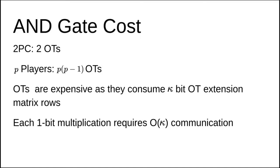Now, OTs are expensive since they are public key primitives. In order to reduce the costs, GMW implementations use the Efficient OT Extension Protocol by Ishai, Kilian, Nisim and Petrank from Crypto 2003. The idea of OT Extension is that a small number of base OTs, along with much cheaper symmetric key operations, can generate a large number of OTs. Furthermore, these OTs can be pre-computed by a trick introduced by Beaver in Crypto 1995. Despite these improvements, OTs consume OT Extension Matrix rows of size kappa, which is the computational security parameter and is often set to 128. Thus, computing a one-bit multiplication requires big O of kappa communication.